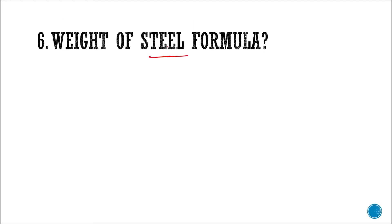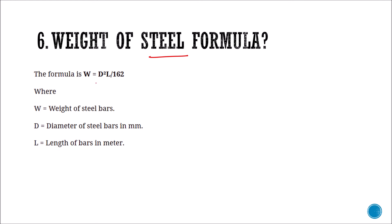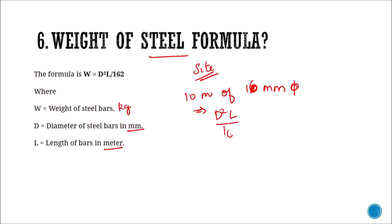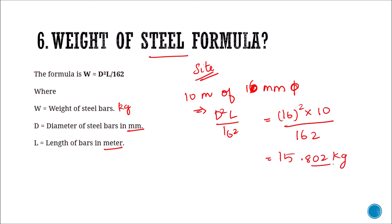The next question: the weight of steel formula. The weight of steel is W = D²L / 162, where W is the weight of steel bars in kg, D is the diameter in mm, and L is the length of bar in meters. This is very important if you are applying for a site engineer post. Quick example: what is the weight of 10 meters of 16 mm bar? W = 16² × 10 / 162 = 2560 / 162 = 15.802 kg.